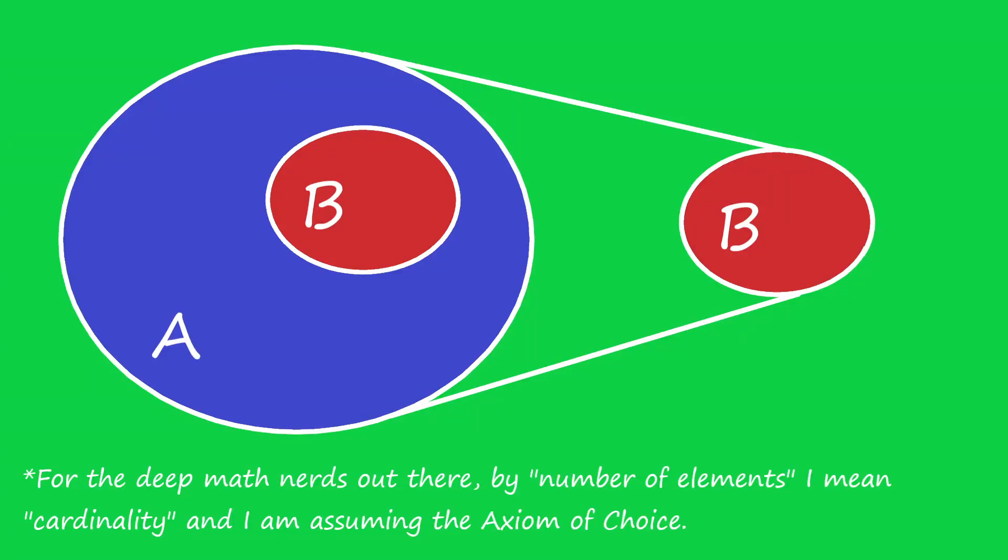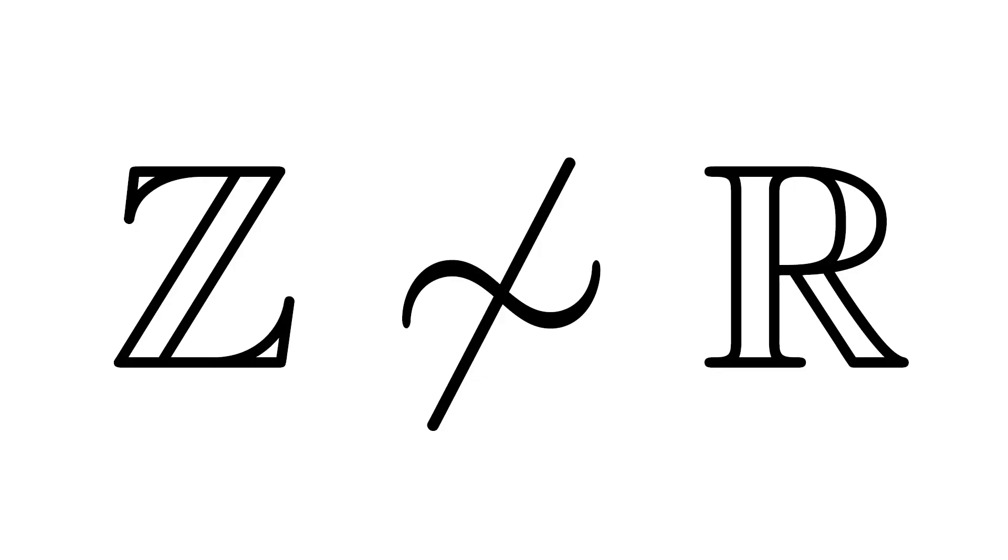But some infinite sets are so much larger than other infinite sets that they cannot be paired up in a one-to-one way. For example, there is no way to pair the integers with the real numbers in a one-to-one way that uses everything in both sets.